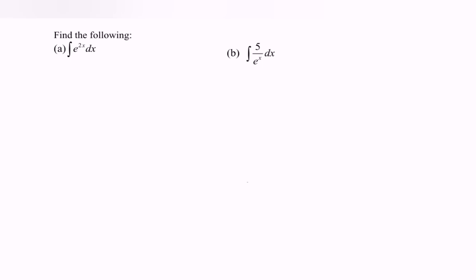Kindly focus on part a: integrate e to the power of 2x with respect to x. We will have e to the power of 2x. Kindly focus on the power — differentiate the situation — and we will have 2, so meaning that over 2 plus c.